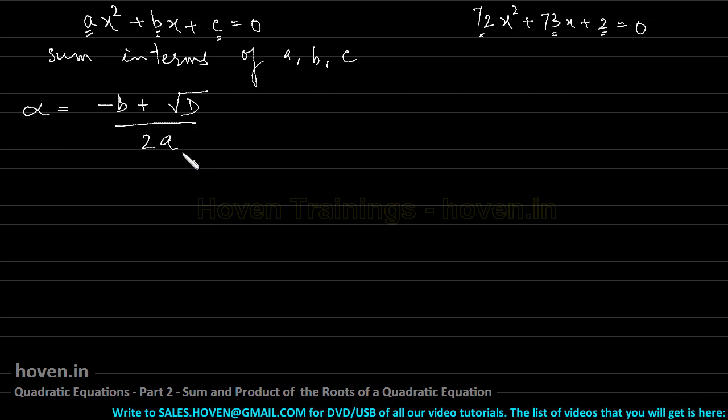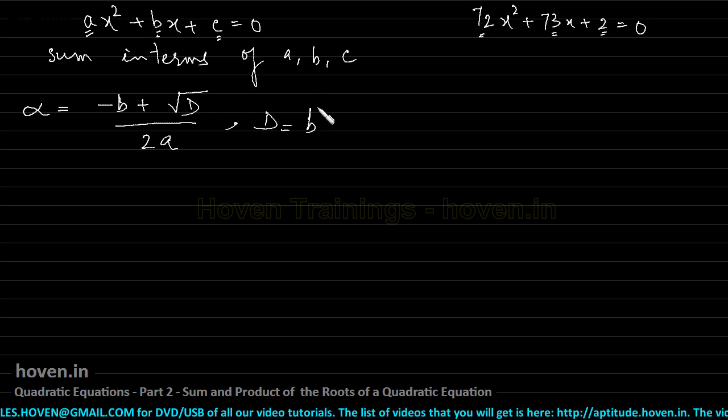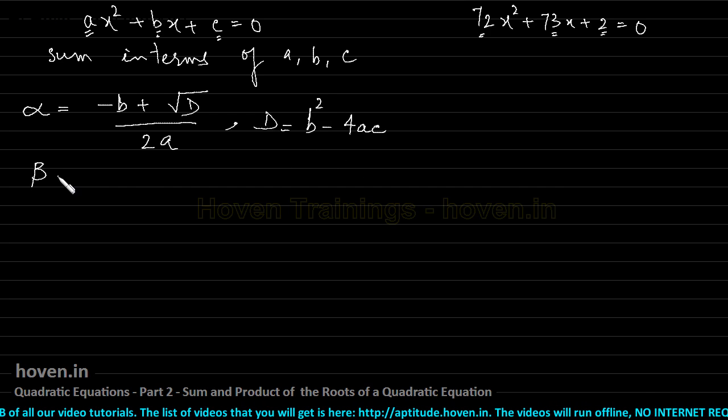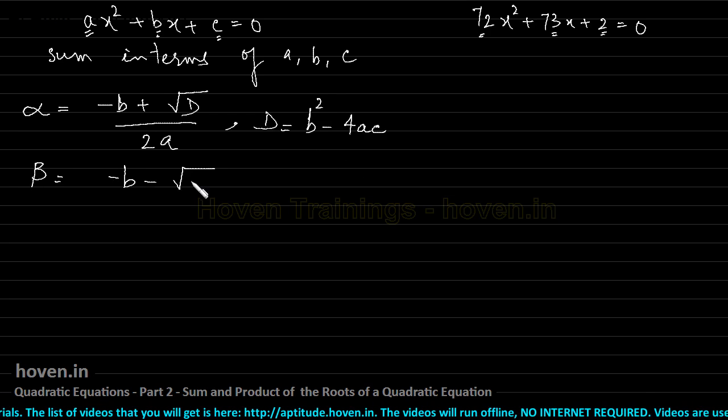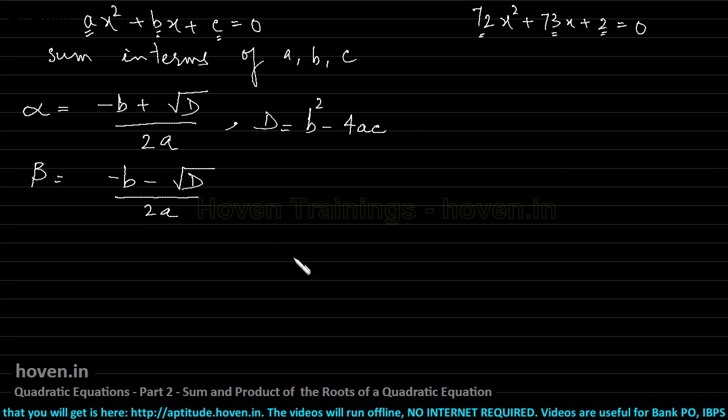Now you already know that what is d. We already from the previous lecture know that d is a short form for b square minus 4ac. And the second root for this, as we found out in the previous chapter, was minus b minus square root of d by 2a. Again d in this case is same as b square minus 4ac.